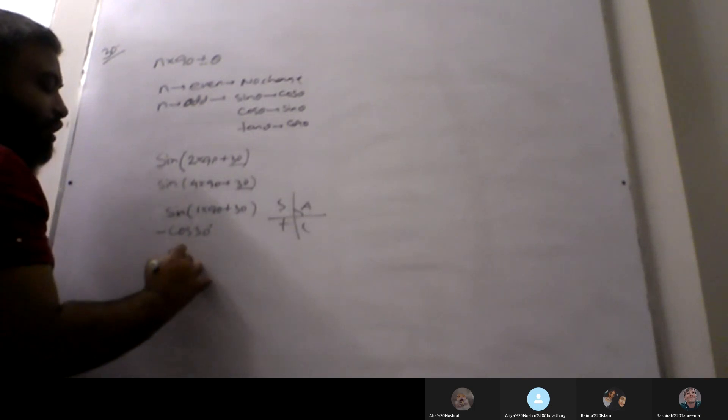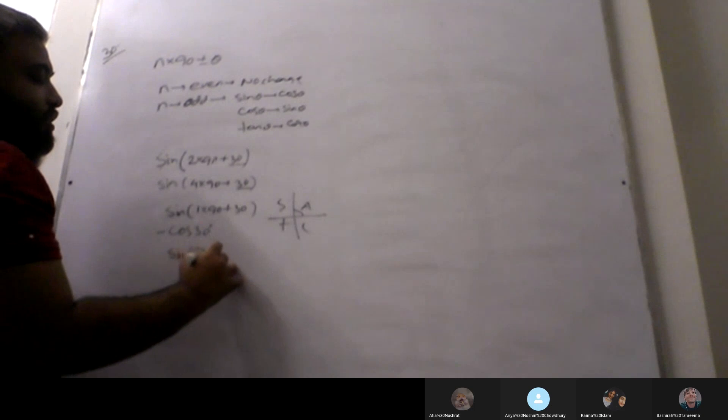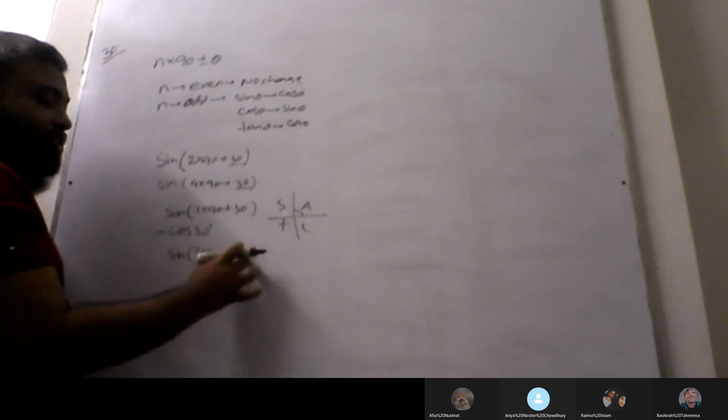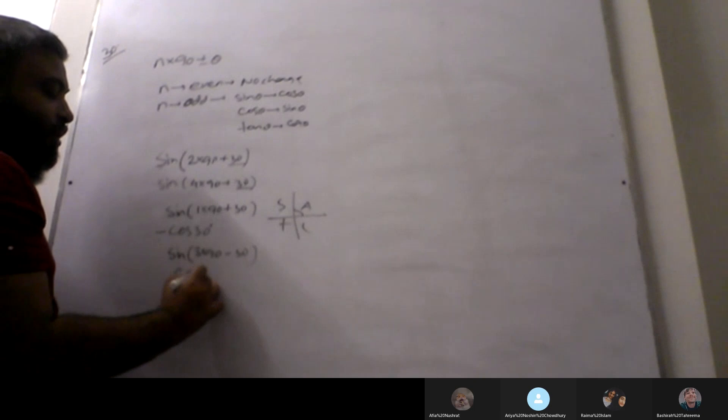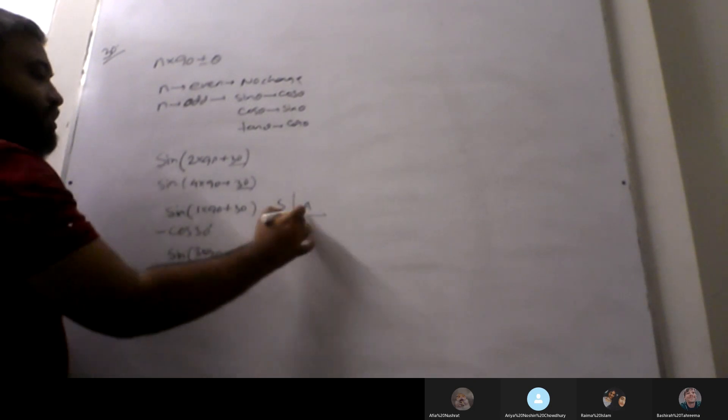The same way we say, sin 3 into 90 minus 30. It is equal to 90 plus, cos 30 value. Positive or negative, it depends on the quadrant. 3 into 90, 190, 290, 390. Minus, now it is equal to 10. So, minus cos 30 represents.